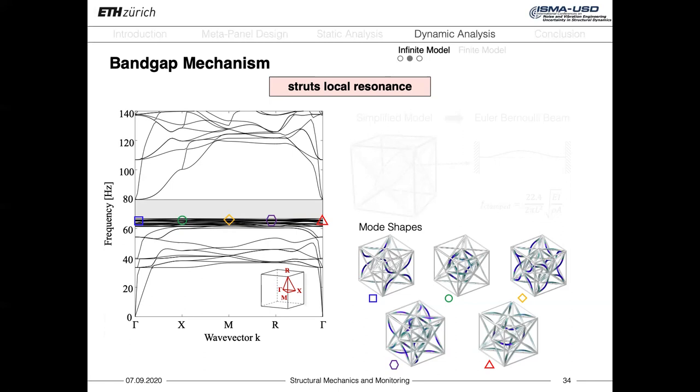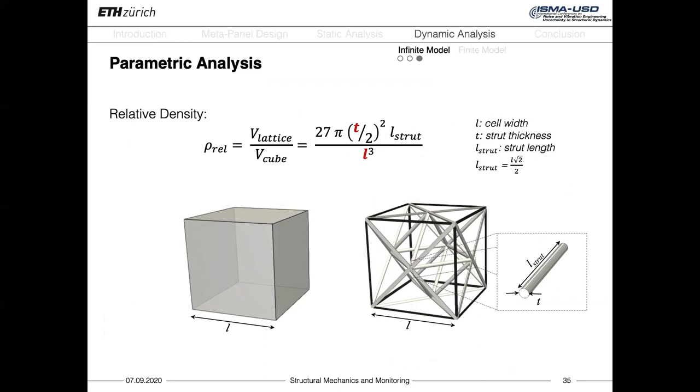Now that the generating mechanism of the band gap is known, we need to understand the parameters that influence its frequency range. More specifically, we can identify a geometrical parameter, the relative density, which represents the ratio between the volume of the lattice structure on your right and the volume of an equivalent filled homogeneous cube on your left. Here we can see that the parameters playing a role are respectively the cell width L, the thickness of the circular strut T, and their length, which is however implicitly related to the cell width. In the next slides, we will show how the attenuation zone changes by varying these parameters.